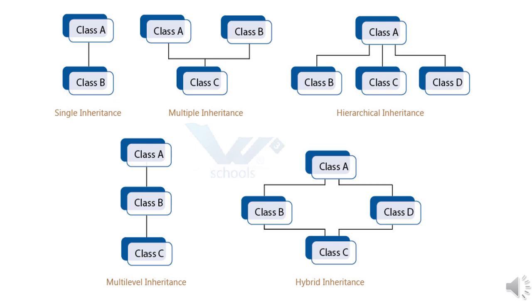The final type is hybrid inheritance or virtual inheritance, which is a combination of more than one inheritance type or form.